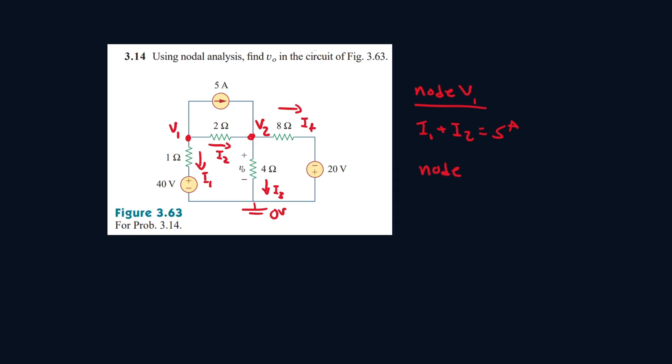Then for node V2, let's see, 5 amps plus I2, they're entering it. And then we have I4 plus I3, they're leaving it.